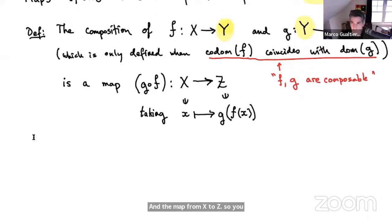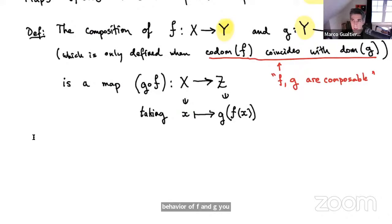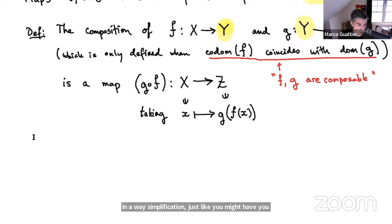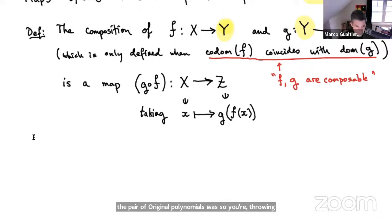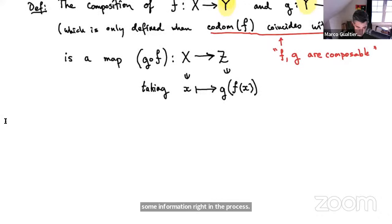In a way, composing two maps is a more efficient way of describing the consecutive behavior of f and g — you don't have to first do f and then g separately. It's a kind of simplification, just like multiplying two polynomials and simplifying the result: once you simplify it, you no longer know what the pair of original polynomials was, so you're throwing away some information in the process.